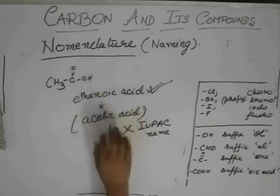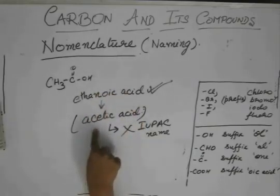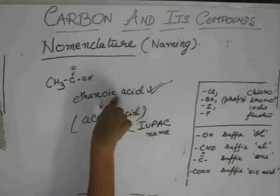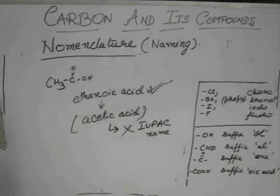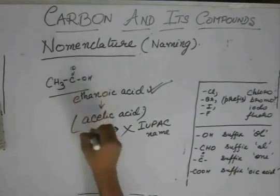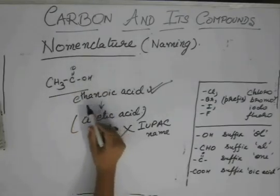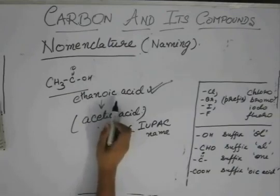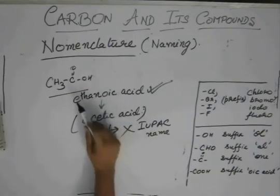So, when you are asked to write IUPAC names, don't write this acetic acid. It is wrong. Always write ethanoic acid. And if you are asked to write the common name of this structure, then write acetic acid. Because this ethanoic acid is not the common name. Acetic acid is the common name for CH3 COOH.